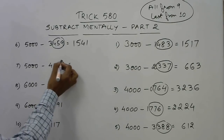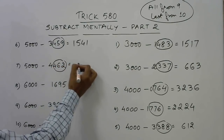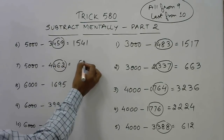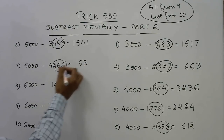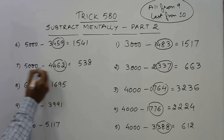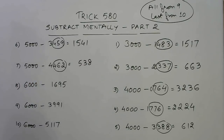Next, 5000 minus 4462. Last three digits 462: 9 minus 4 is 5, 9 minus 6 is 3, 10 minus 2 is 8. Increase the leading digit 4 by 1 to get 5, and 5 minus 5 is 0. So the answer is 538.